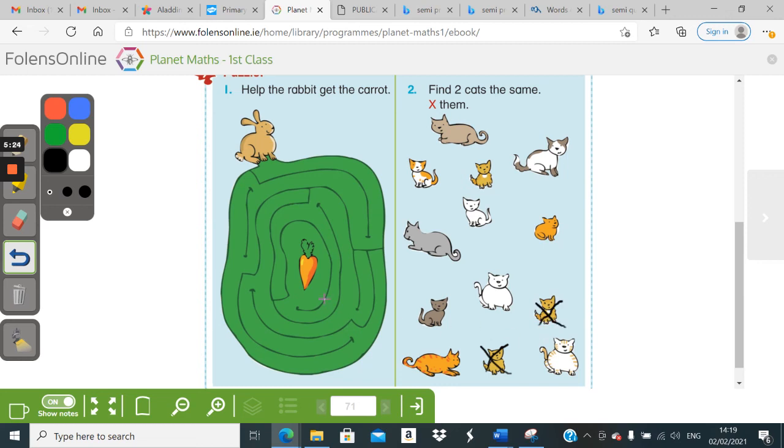But, Mr. Dunker's put the X's on too quickly, because this little guy here has a little white patch. This little guy doesn't. So, look closely and find the two cats that look exactly the same.